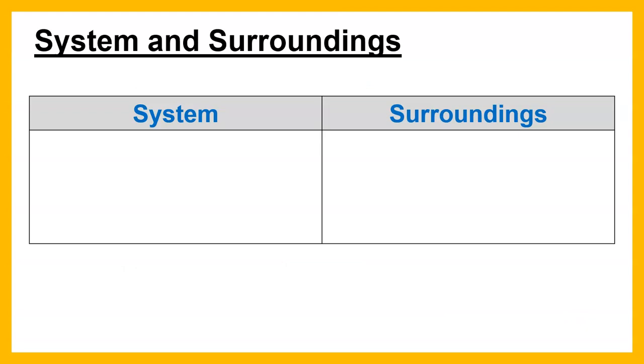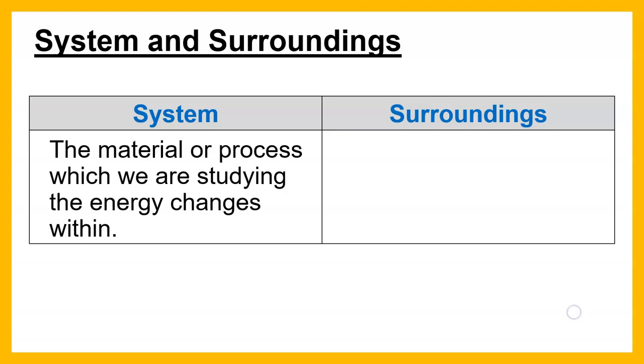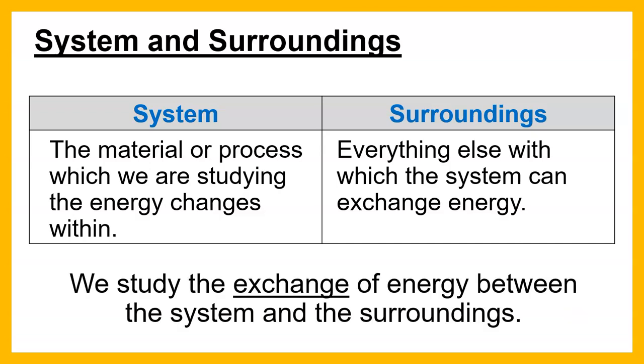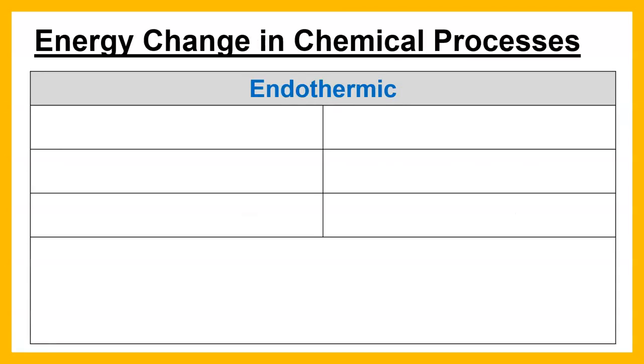One of the reasons people struggle with this is because they mix up the concept of system and surroundings. The system is whatever thing we're actually interested in. Is it the chemicals? Is it the metal block? What is the actual thing that we're trying to study? And the surroundings is everything else. What we are often looking at in something like calorimetry is that exchange between system and surroundings.